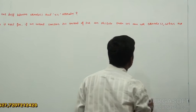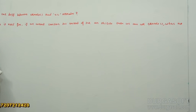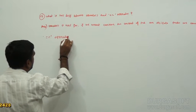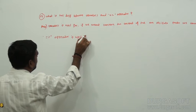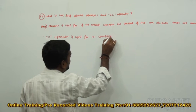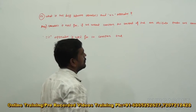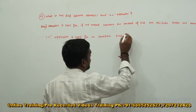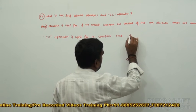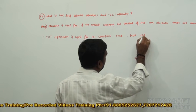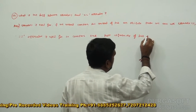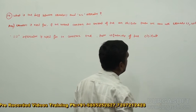Whereas, the double equal to operator is used to compare the references of an object or objects.